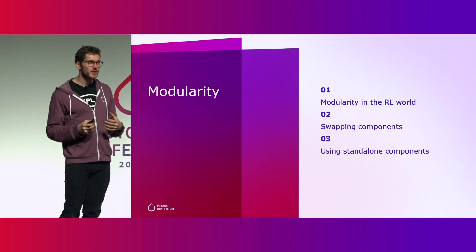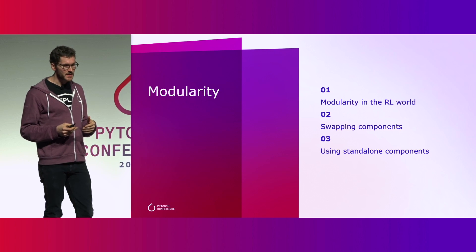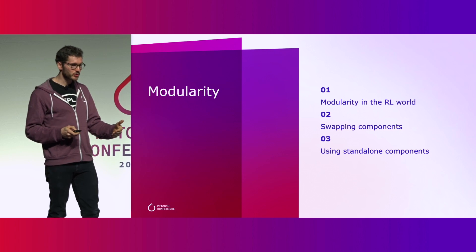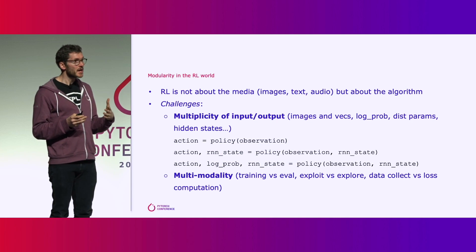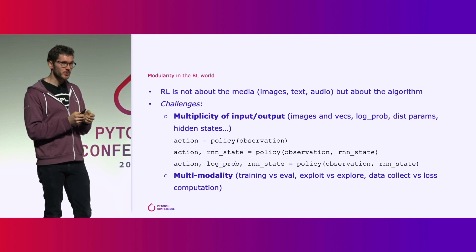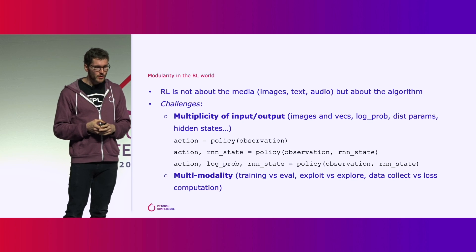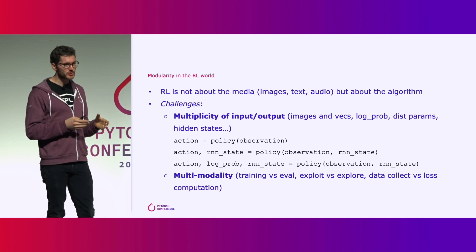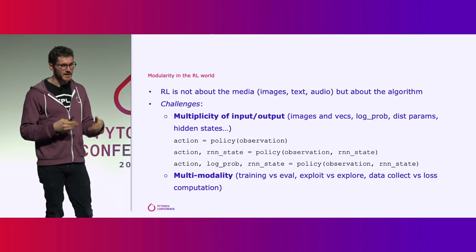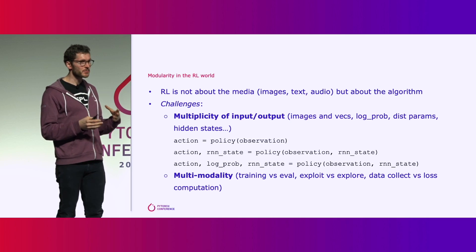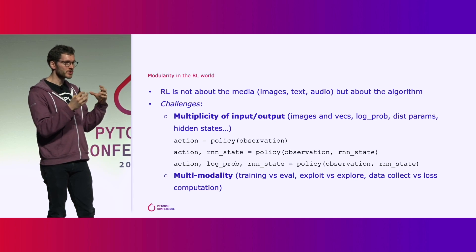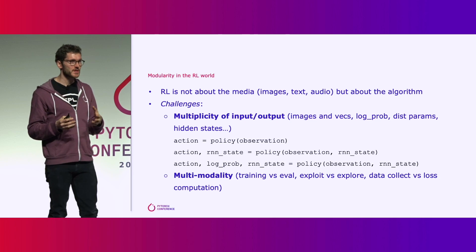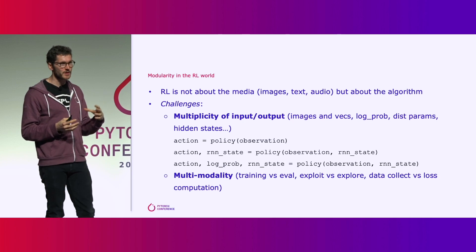Modularity, in our opinion, comes in two flavors. The first is being able to swap components with each other; the second is being able to adopt a single component without adopting the whole library. It's worth noting that reinforcement learning is not about the media — unlike vision with images or NLP with text. RL is about the algorithm: how a policy interacts with an environment to collect data, what you do with that data when passed through a loss function. It's really about the interaction of all those pieces together.